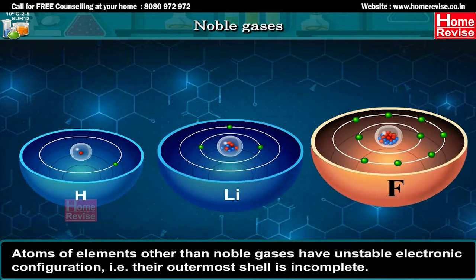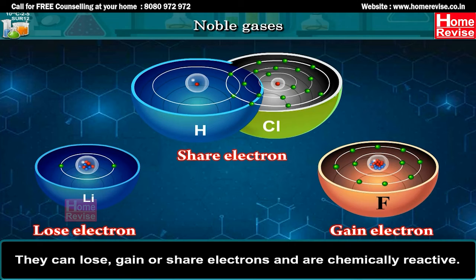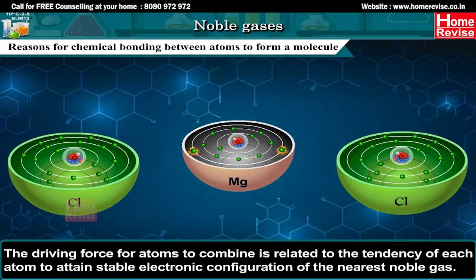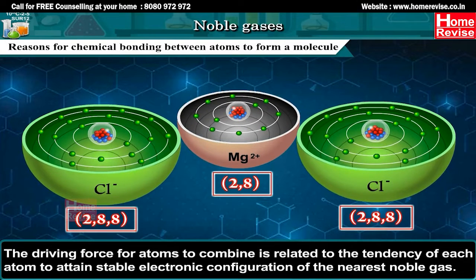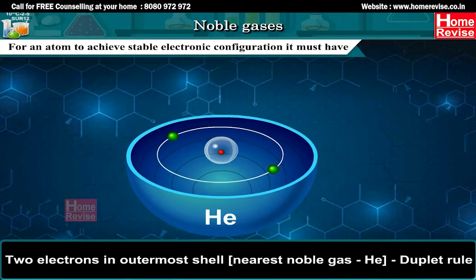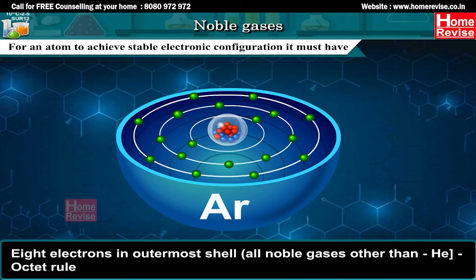Atoms of elements other than noble gases have unstable electronic configuration, i.e. their outermost shell is incomplete. They can lose, gain or share electrons and are chemically reactive. The driving force for atoms to combine is related to the tendency of each atom to attain the stable electronic configuration of the nearest noble gas. For an atom to achieve stable electronic configuration, it must have 2 electrons in outermost shell — duplet rule — or 8 electrons in outermost shell — octet rule.